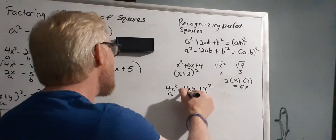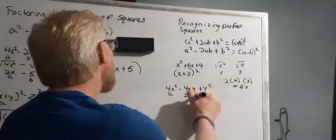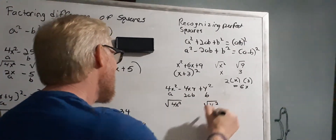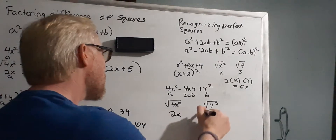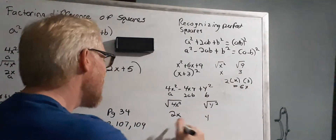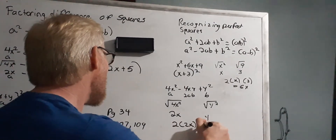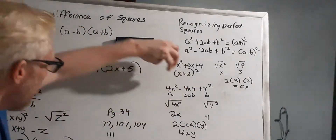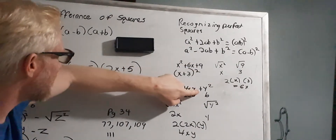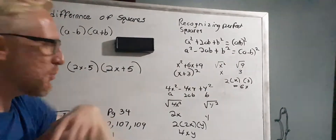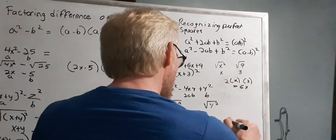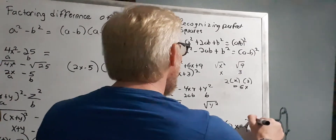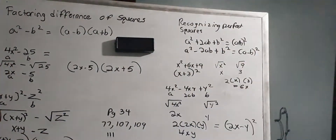Looking at the second example, 2x is a and y is b. I find the square root of 4x squared, which is 2x, and the square root of y squared, which is y. Multiplying 2 times 2x times y gives 4xy, which matches the middle term. Since there's a minus sign in the middle and a plus at the end, this is in the form (a minus b) squared, so the answer is (2x minus y) squared.